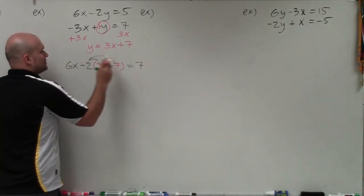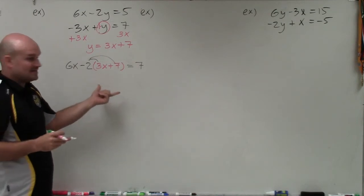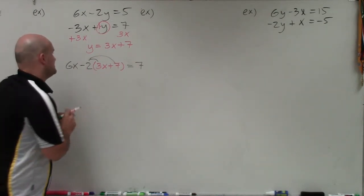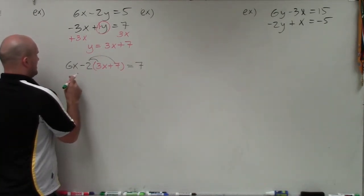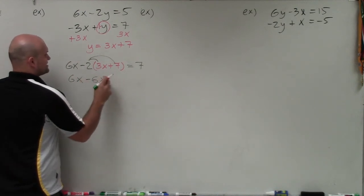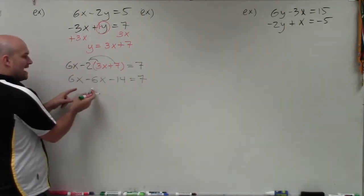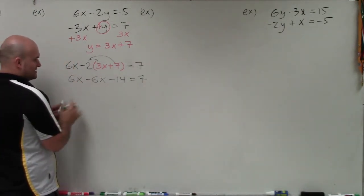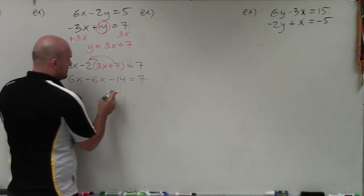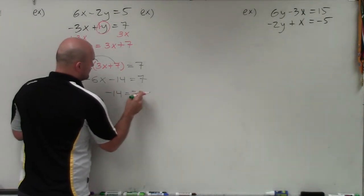Now I apply distributive property. You can see here I have a multi-step equation, so I'm going to have to simplify this side. So I apply distributive property, and when doing that, I get 6x minus 6x minus 14 equals 7. Well, now I simplify down. 6x minus 6x is just 0x, so therefore I have negative 14 equals 7.